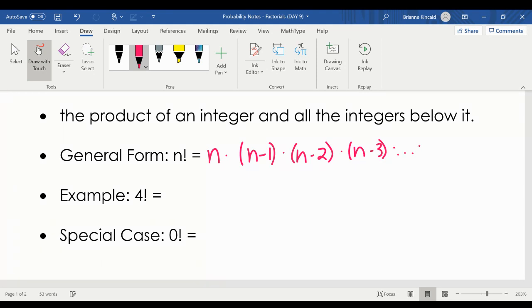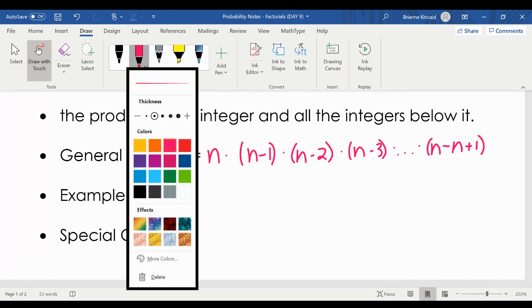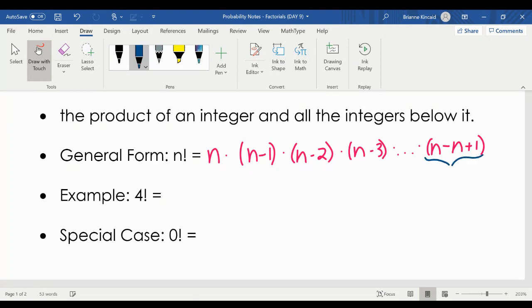And then you continue that pattern, basically until you get down to n minus n plus 1. This essentially, this n minus n plus 1 is just 1. So you multiply until you get down to 1.